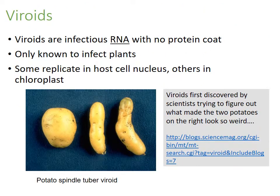Viroids are not covered in the textbook, but they're worth talking about. They are infectious RNA that do not have a protein coat, and so far we've only found them infecting plants. Some replicate within the host cell nucleus and others use the host cell's chloroplast. Potato spindle tuber viroid is an example — it causes those funny-shaped potatoes.